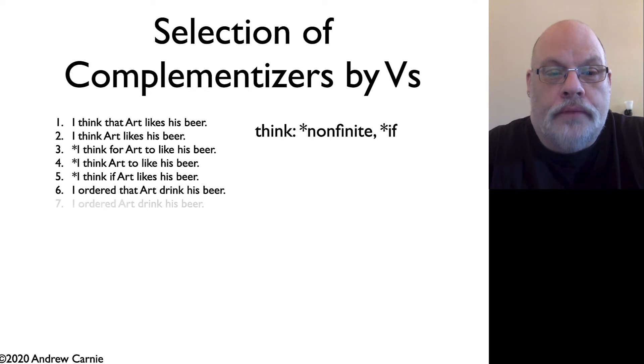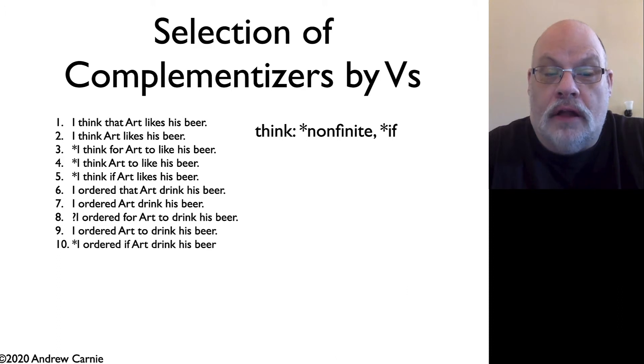This is the verb ORDER. ORDER can take a complement clause with that, or a finite clause without that. So I ordered that Art drink his beer. I ordered Art drink his beer. It's a little odd to say, I ordered for Art to drink his beer. That's a little strange, but it is okay if you put enough context on it. I ordered Art to drink his beer is perfectly fine, but the question form is terrible. I ordered if Art drank his beer or drinks his beer. So the pattern with ORDER is you can't have an embedded question. Notice that's different than the constraints on THINK.